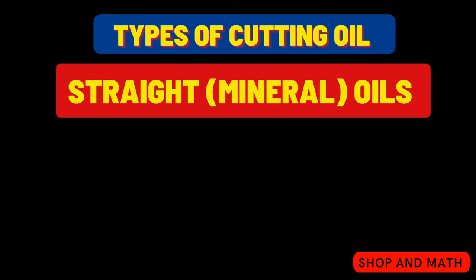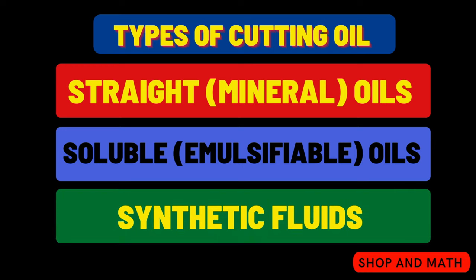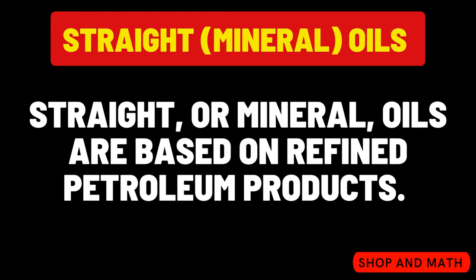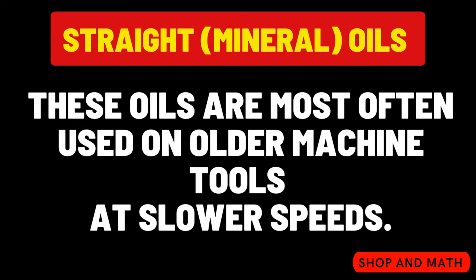There are three main types of cutting oils: straight cutting oil, soluble cutting oil, and synthetic fluids. Straight or mineral oils are based on refined petroleum products. They contain no water and are formulated for medium to heavy duty applications in which lubrication is more important than cooling. These cutting oils are most often used on older machines at slower speeds.